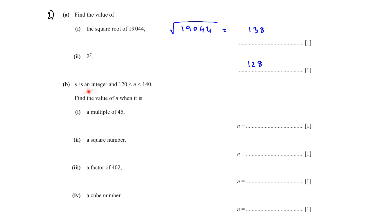B: n is an integer and 120 is less than n and n is less than 140, so n has to be between 120 and 140. Find the value of n when it is a multiple of 45. You can write and check 45 multiplied by 2, 45 multiplied by 3, whichever number comes between 120 and 140. The answer is 45 times 3 is equal to 135.